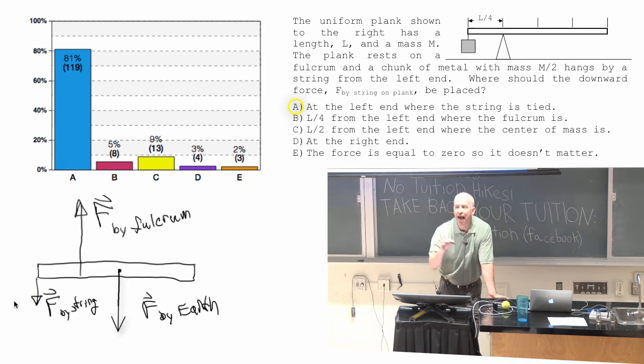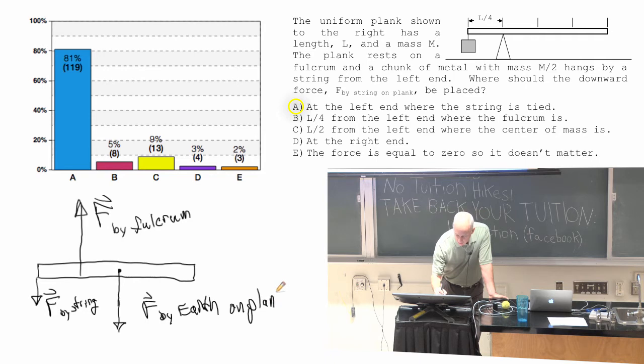The string has half the mass that the plank does. So the force by the Earth on the plank is twice as big as the force by the string on the plank.